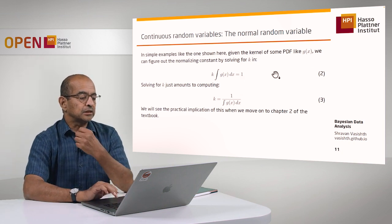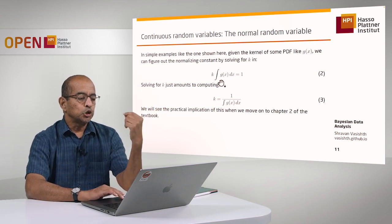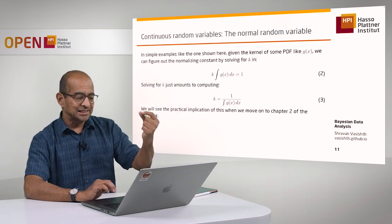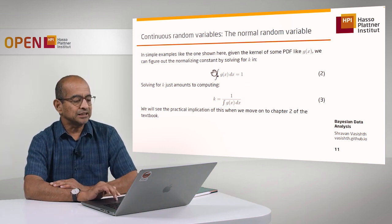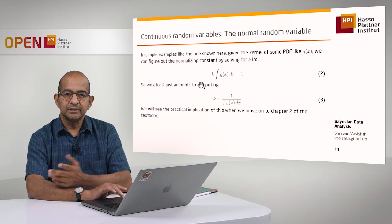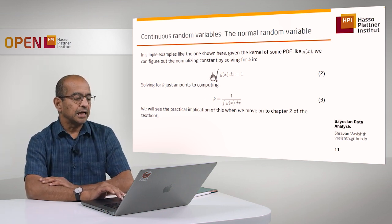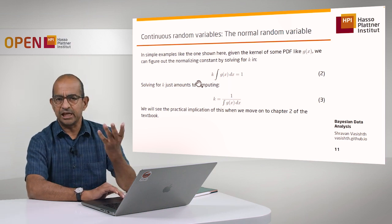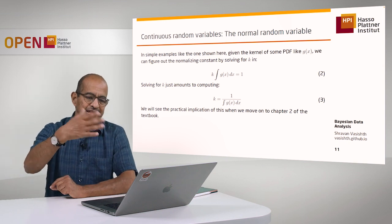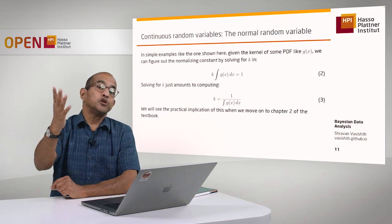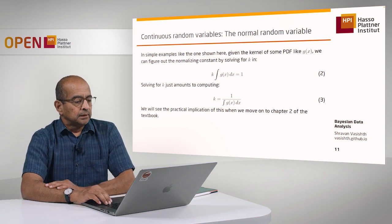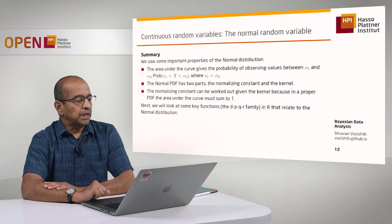One general point: for any kernel g(x) you have, you can figure out the normalizing constant in a simple way — at least in simple cases like this one. There is some constant k that will make the area under the curve sum to one. To find it, you just solve for k: it turns out to be one over the integral of the entire kernel term. It's simple algebra. So the normalizing constant can always be worked out later if you know what the kernel is.